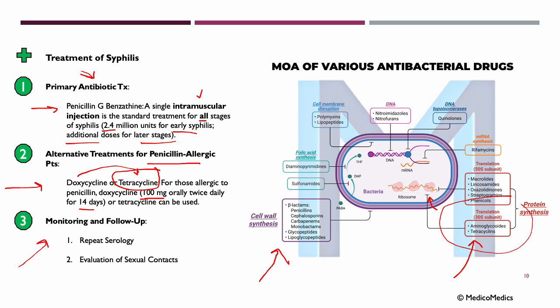We also have monitoring and follow-up. We do repeat serology tests — follow-up tests confirming that treatment has worked and that syphilis is no longer present in the body. Testing should be done at regular intervals to ensure the infection has been eradicated. Evaluation of sexual contacts is also important — sexual partners should be tested and treated to prevent reinfection or further spread. Always test for HIV when diagnosing syphilis.